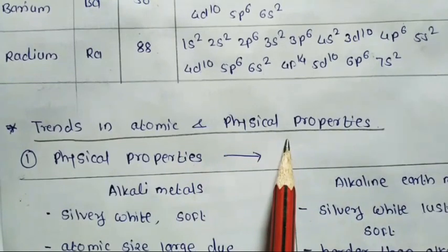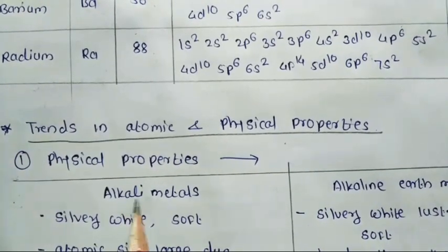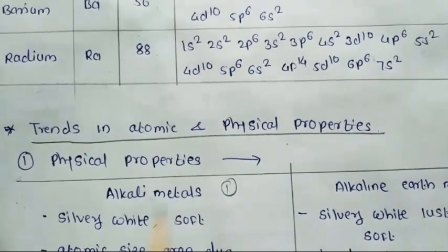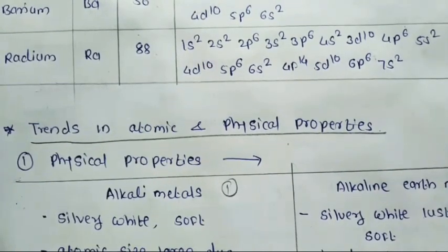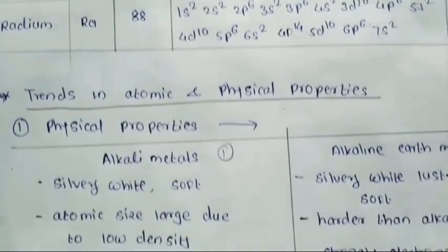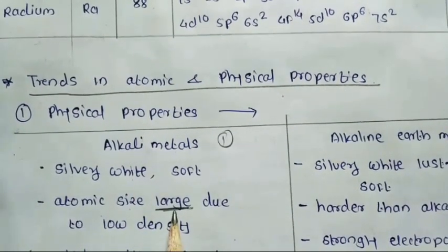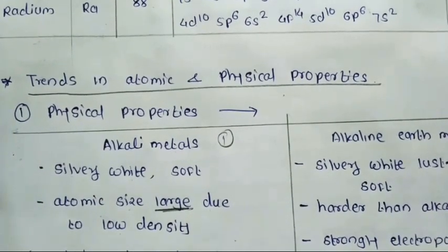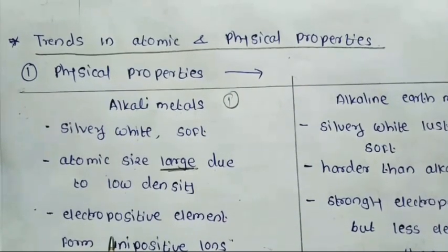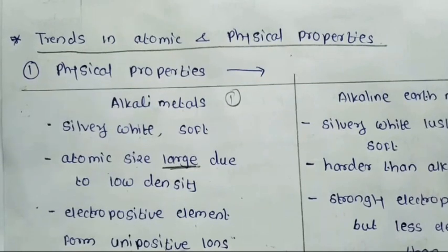Now we see the physical properties of group 1 and group 2 elements. Alkali metals are silvery white and soft in nature. Their atomic sizes are large, due to which they have lower density. These alkali metals are the most electropositive elements — meaning they have the ability to form unipositive ions.